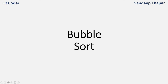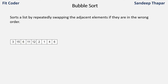Hi everyone. In this video we'll discuss bubble sort. Bubble sort is a sorting algorithm which sorts a list by repeatedly swapping the adjacent elements if they are in the wrong order. It's a comparison-based sorting algorithm, like insertion sort and selection sort. The way it sorts is by swapping the adjacent elements.